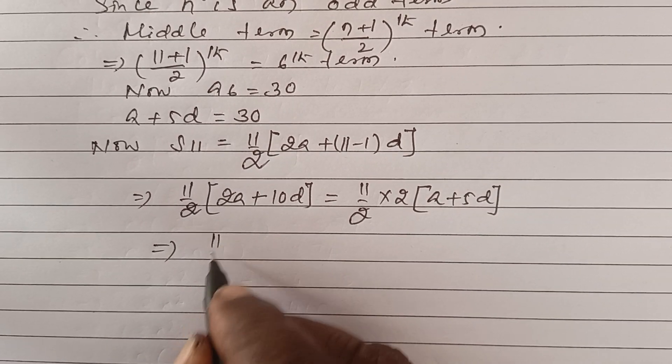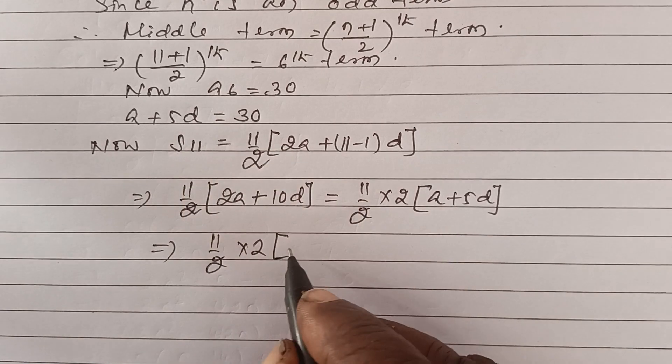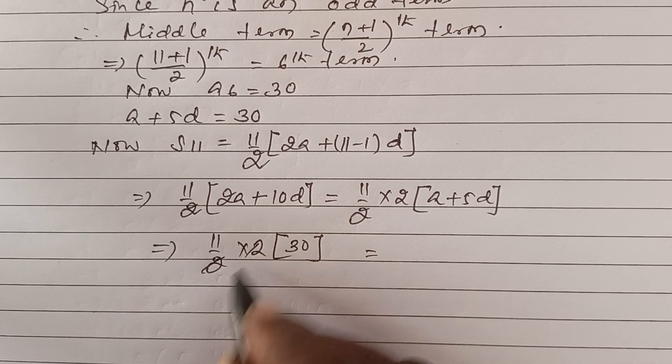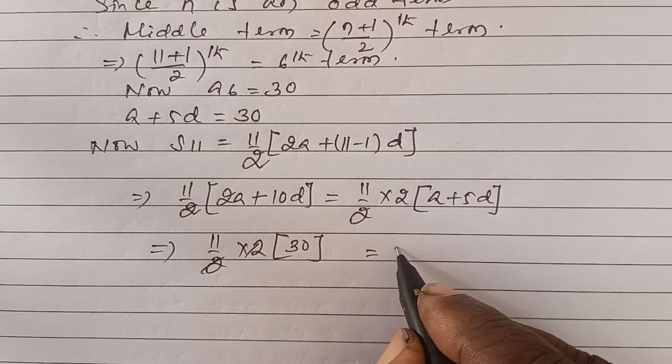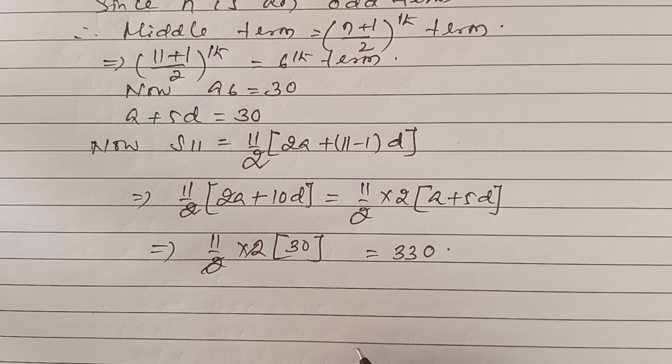Then 11 by 2 into 2 into a plus 5d. Since a plus 5d equals 30 and the 2 cancels, we get 330 as S11, the answer.